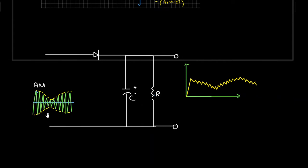When the input amplitude modulated signal is positive, the diode acts as a closed switch or short circuit, and as a result the capacitor starts charging. The capacitor continues to charge until the input signal reaches its peak value. When the input signal reaches its peak value, the capacitor will be fully charged to the peak value of the amplitude modulated signal.